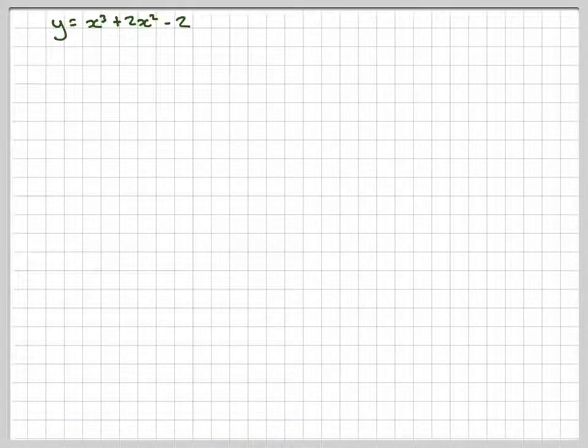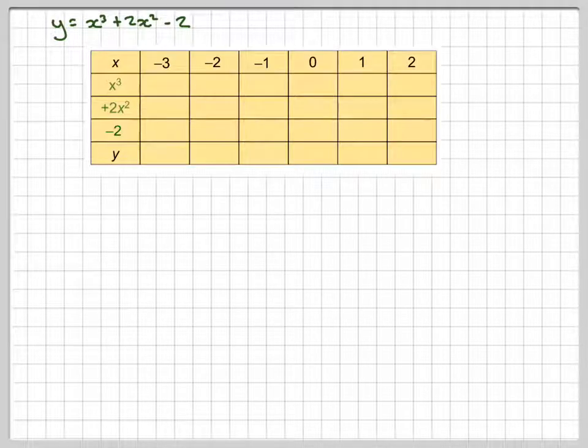Right, so this is my function. Making some sort of table, we've got x here: minus 3, minus 2, minus 1, 0, 1, 2. And then down the side here, putting x cubed plus 2x squared minus 2. This is just the working out, these are the coordinates.